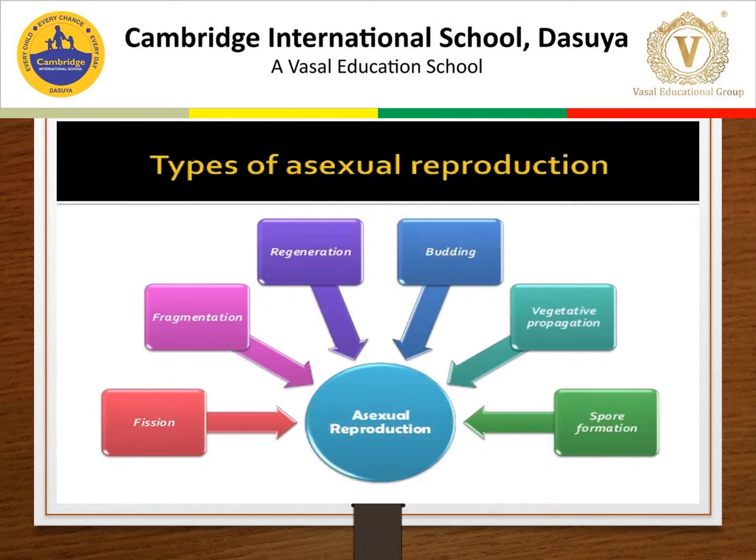The types of asexual reproduction are: fission, fragmentation, regeneration, budding, vegetative propagation, and spore formation.